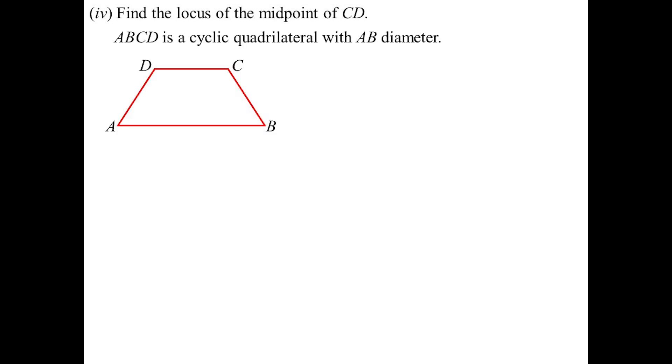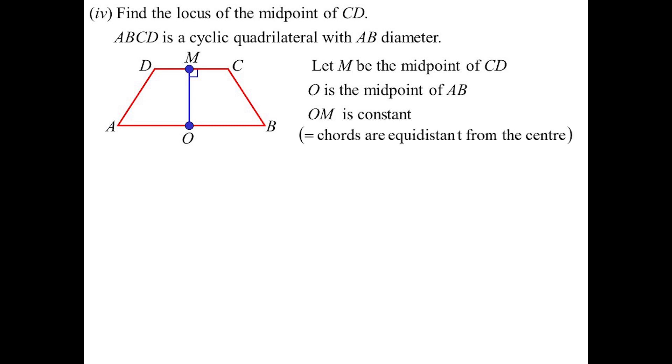Find the locus of the midpoint of CD. ABCD is a cyclic quad, we know AB is the diameter. So the midpoint of CD, I'll just call it M for midpoint. O, the center of the circle that's going around our cyclic quad, is going to be the midpoint of AB. So OM must be constant because CD is constant, and equal chords are always equidistant to the center of the circle. So no matter where it ends up, OM is the distance of that chord - the chord's the same length, it's always got to be the same. So I know OM is constant. Find the locus of M - M is a constant distance from another point O, so the locus has got to be a circle.